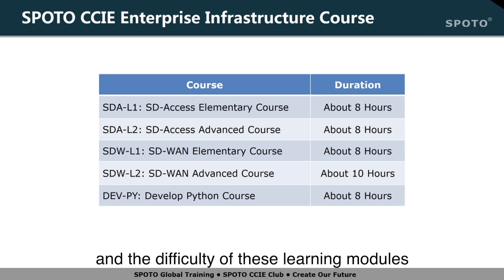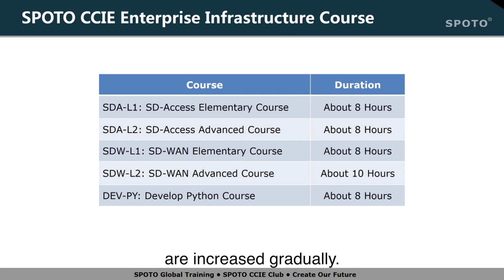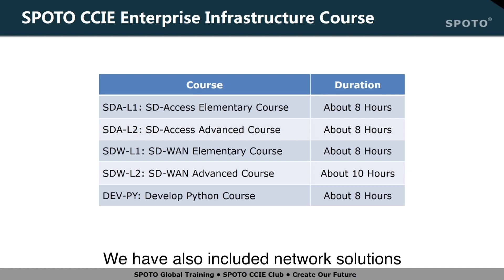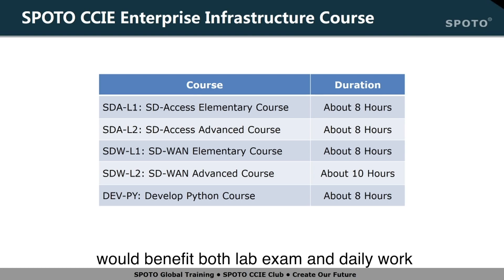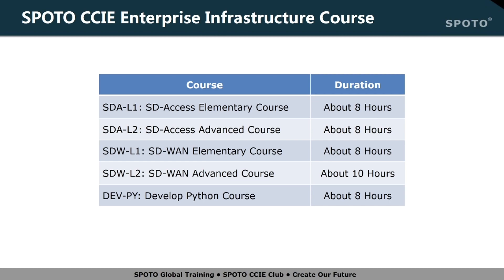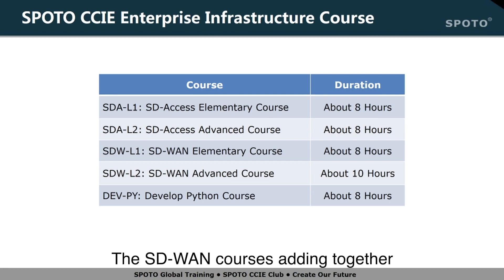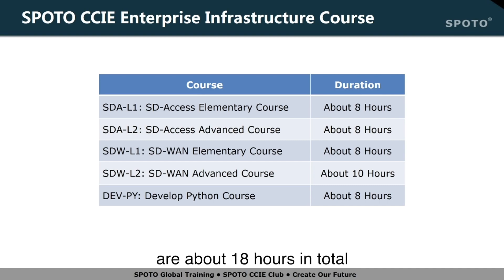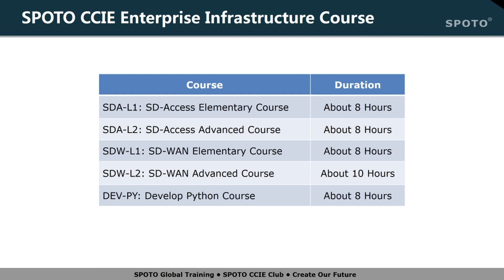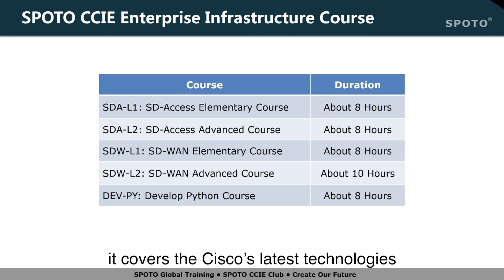The difficulty of these learning modules is increased gradually. We have also included network solutions from real scenarios in this course, so the learning outcome would benefit both the lab exam and daily work. The SD-Access courses together are about 16 hours in total. The SD-WAN courses together are about 18 hours in total. The Python course is about 8 hours. The entire course is about 42 hours and covers Cisco's latest technologies of the enterprise infrastructure.